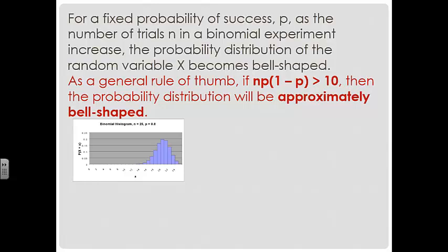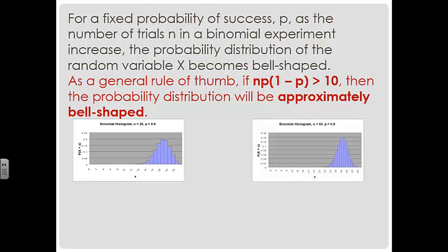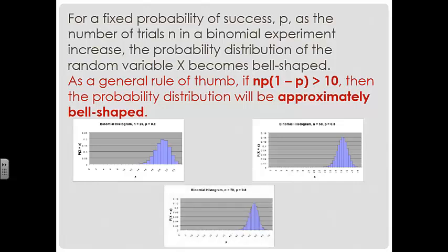Looking at a binomial histogram with 25 trials and P = 0.80, it's a little skewed to the left. When we increase to 50 trials with the same probability, we get closer to that symmetric normal shape. And with 70 trials at the same probability, we get even closer to that symmetric bell shape — confirming that as trials increase, the distribution becomes more bell-shaped.